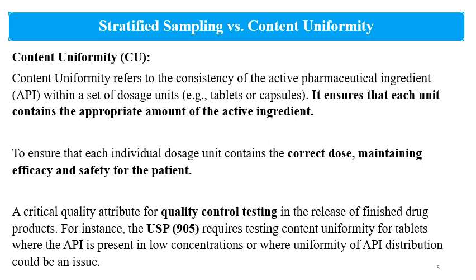These variations are as per regulatory guidelines — for example, the assay limit is 90% to 110% of the label claim, or 95% to 105% of the label claim. CU ensures that each individual dosage unit contains the correct dose so that safety and efficacy can be maintained and the patient will receive a safe and effective dose of the medicine with each administration.